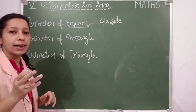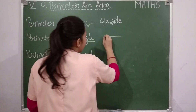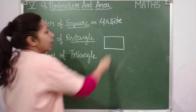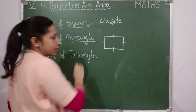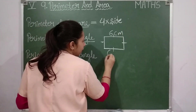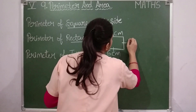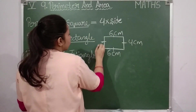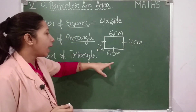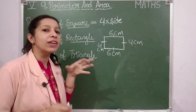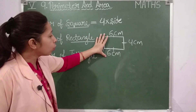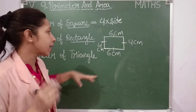Now let us talk about the perimeter of a rectangle. A rectangle is a four-sided closed figure where the opposite sides are of the same length — this side equals the opposite side, and this side equals the other. Suppose two sides are six centimeters and the other two sides are four centimeters. Now I want to calculate the perimeter of this rectangle, and we know that perimeter means adding the boundaries of the figure.